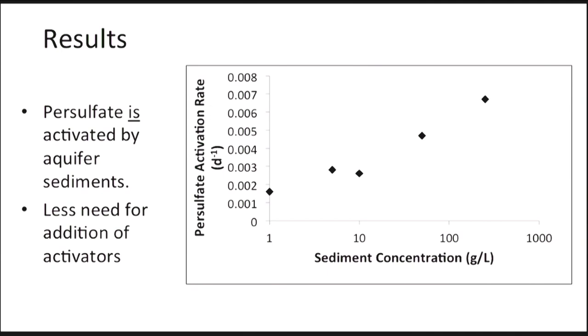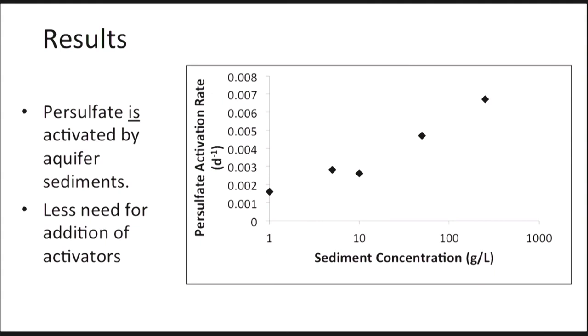This slide shows the results of some experiments that I've done in the laboratory using sediments from an aquifer in San Diego. I prepared various solutions of persulfate and monitored the reaction of persulfate to sulfate radical over time in the presence of different amounts of the sediment. What the plot shows is that as the amount of sediment present increased, the persulfate activation rate also increased. This tells us that persulfate is activated by the aquifer sediments and that the sediment is an effective catalyst for activation. Knowing this is important because it points the way to possible persulfate treatments that can happen without the need for extra activators, and this could result in cleanups that are cheaper and more effective.